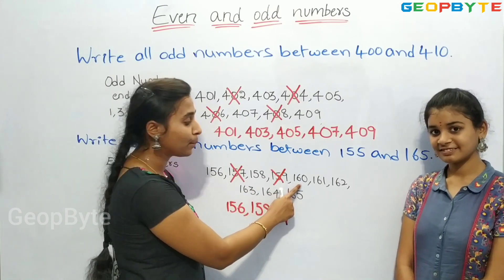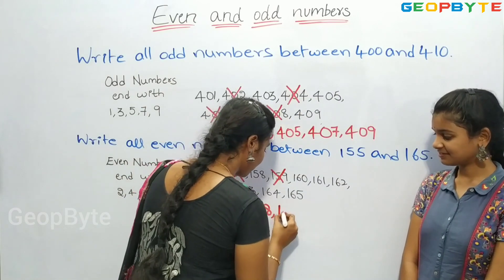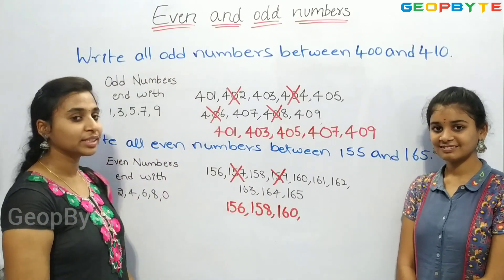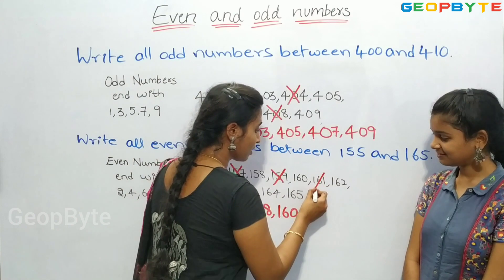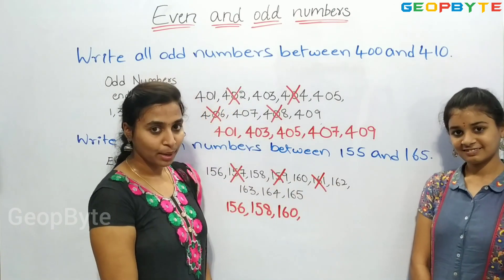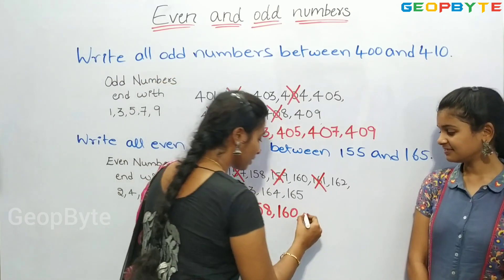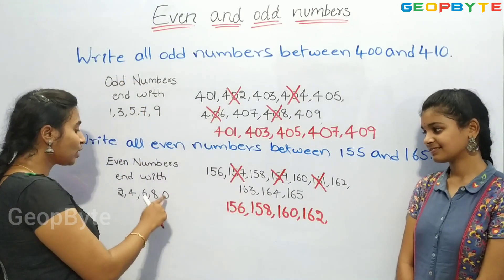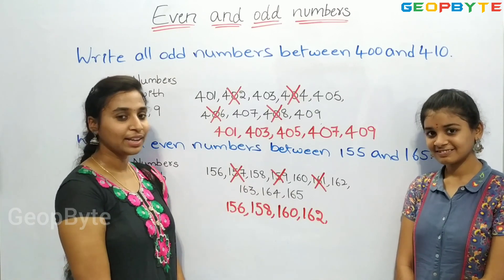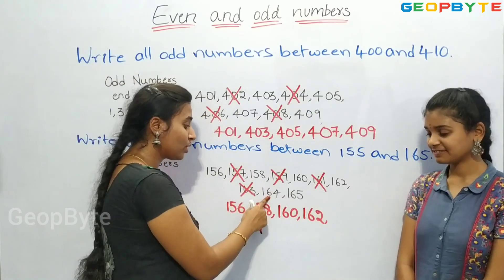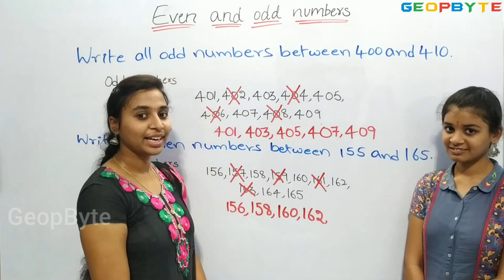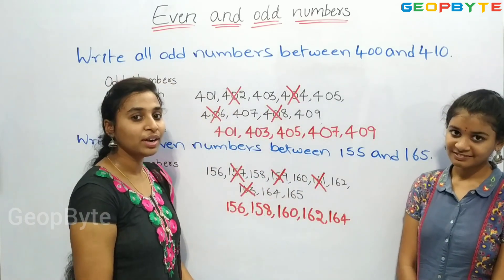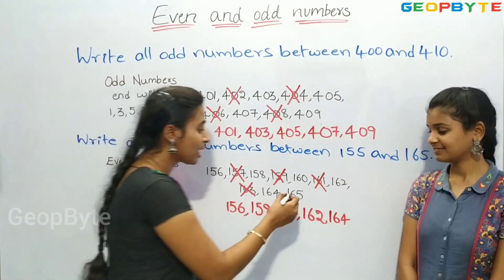160 is ending with 0 — it is an even number. 161 is not ending with any of these numbers. 162 is ending with 2 — it is an even number. 163 is not ending with any of these numbers — it is not an even number. 164 is ending with the number 4 — it is an even number. 165 is not ending with any of these numbers — it is not an even number.